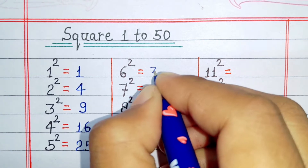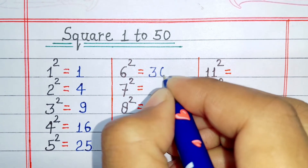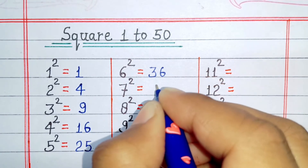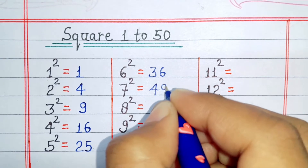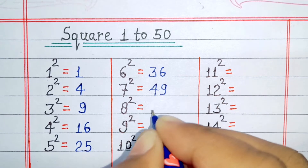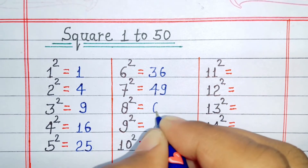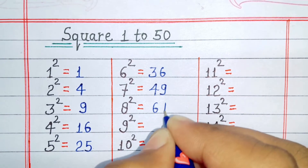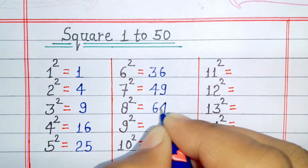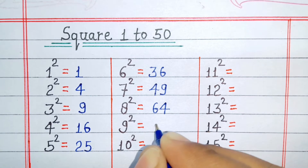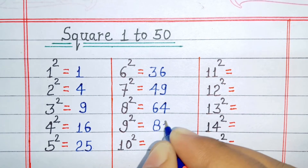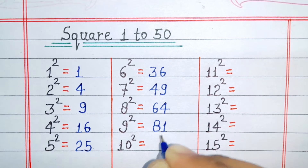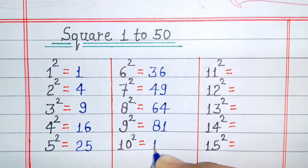Square of 6 is 36. Square of 7 is 49. Square of 8 is 64. Square of 9 is 81. Square of 10 is 100.